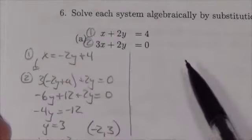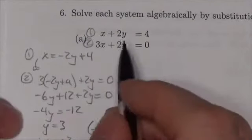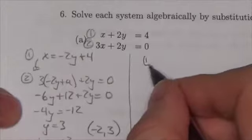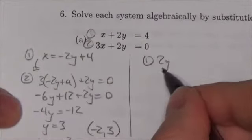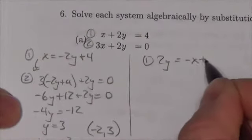Notice that 2y shows up in both. Well in this case, equation 1, I could have done it like this and made 2y equal to negative x plus 4.